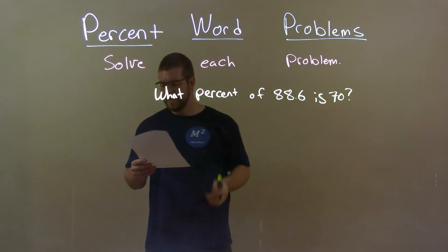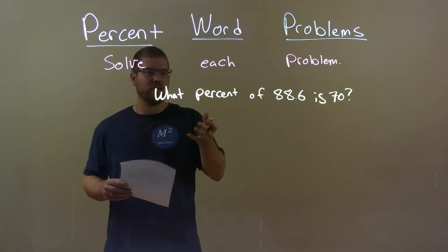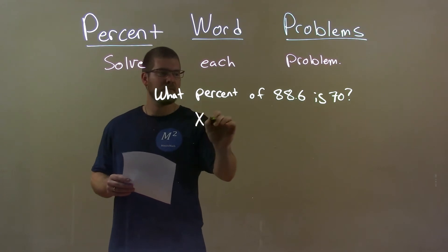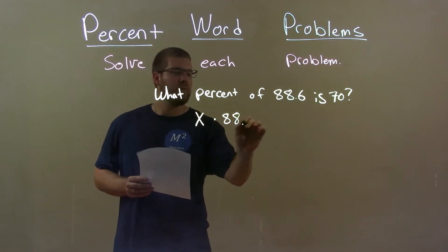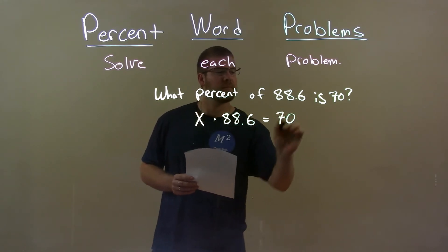So what percent of 88.6 is 70? Let's write this as an equation. What percent, x, of (multiplication) 88.6 is (equal sign) 70.